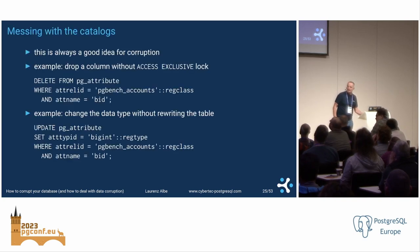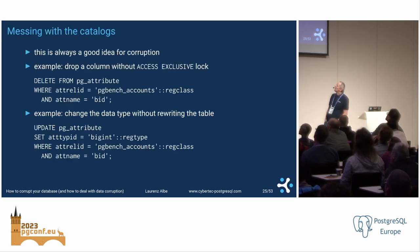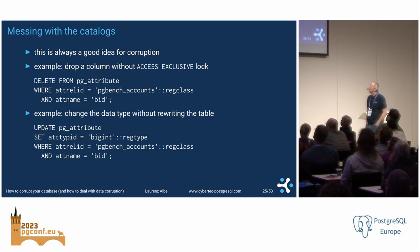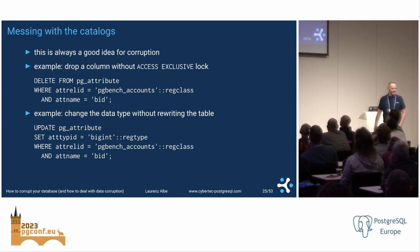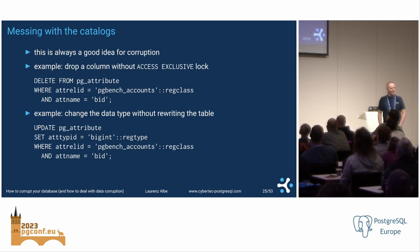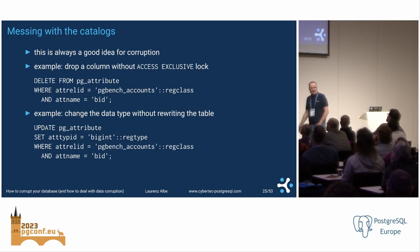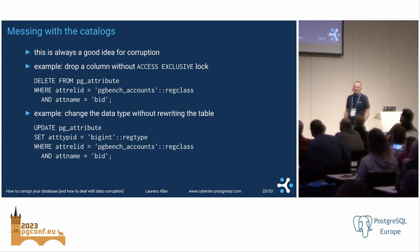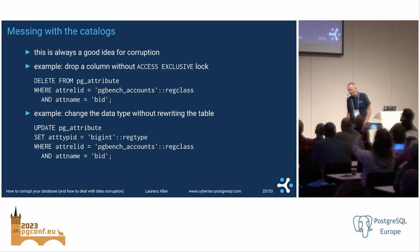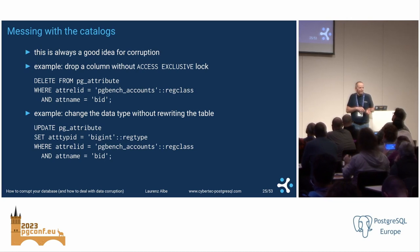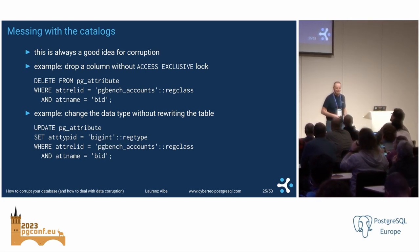People sometimes modify catalogs not for fun but to take shortcuts. For example, you want to drop a column — a very short operation in Postgres, just metadata manipulation, but it requires a short access exclusive lock. If you have long-running transactions all the time, you might think: just delete from pg_attribute. But it won't work because the column is still there and your metadata won't match your data. Or you might try to change a data type with a simple update. You can also update pg_database and change your collation — there are unlimited ways to break a database with catalog updates.